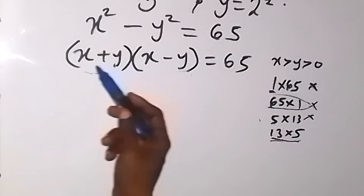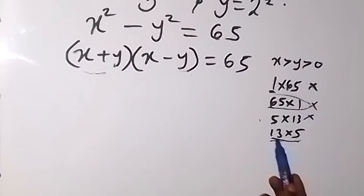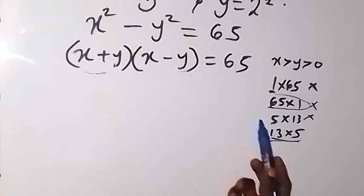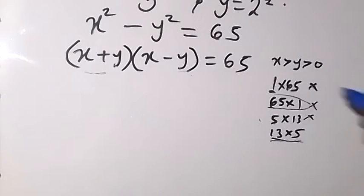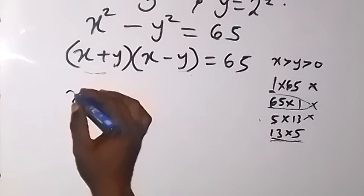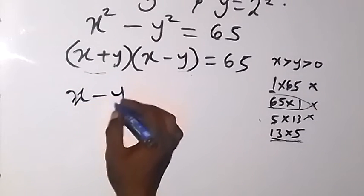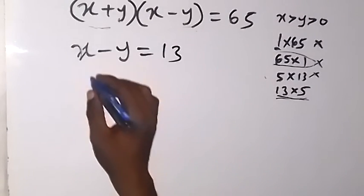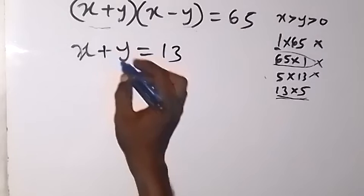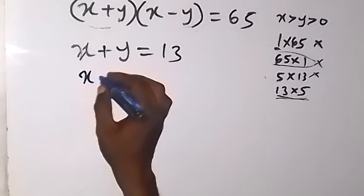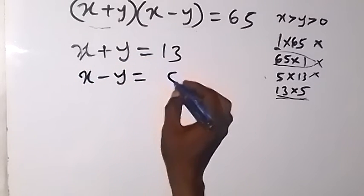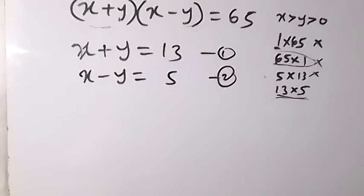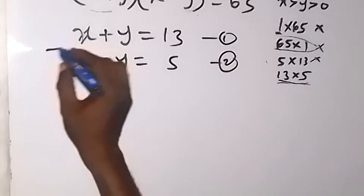So the last option is 13 times 5. We can confirm this works because the first bracket x plus y, which is 13, is greater than x minus y, which is 5. So we set x plus y equals 13 as equation 1, and x minus y equals 5 as equation 2. Let us now solve these two equations simultaneously.